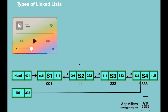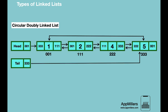Finally, the fourth type is the circular doubly linked list. The only difference from the doubly linked list is in its first and last nodes. The next reference of the last node points to the first node, and the previous reference of the first node points to the last node. This creates circular traversal in both directions — that's why it's called a circular doubly linked list.